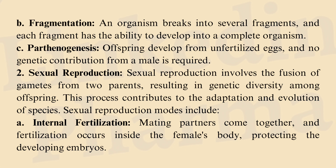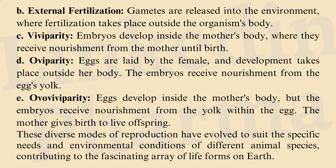Sexual Reproduction involves the fusion of gametes from two parents, resulting in genetic diversity among offspring, contributing to adaptation and evolution. Modes include: a) Internal fertilization — mating partners come together and fertilization occurs inside the female's body, protecting the developing embryos. b) External fertilization — gametes are released into the environment where fertilization takes place outside the organism's body. c) Viviparity — embryos develop inside the mother's body, receiving nourishment from the mother until birth. d) Oviparity — eggs are laid by the female and development takes place outside her body; embryos receive nourishment from the egg's yolk. e) Ovoviviparity — eggs develop inside the mother's body, but embryos receive nourishment from the yolk within the egg, and the mother gives birth to live offspring.